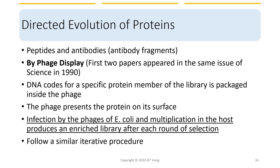The selection process is very similar to the directed evolution of enzymes, with the exception that during the enrichment process, the isolated phage particles are used to infect a new culture of bacteria, which leads to the production of a new library of phage particles with the selected mutations. This process is repeated multiple times to enrich for the desired mutations.